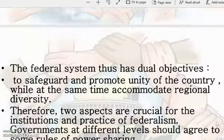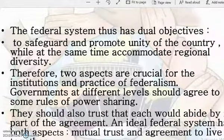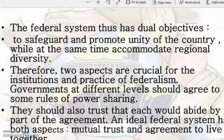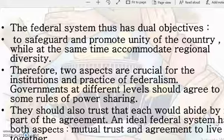Federal government has dual objectives: first, to safeguard and promote the unity of the country, while at the same time accommodating regional diversity. We have different states, most divided on the basis of language, with different communities of people living together. The federal system has to take care that people of different communities can live together happily in their diversity, maintaining unity while accommodating that diversity.